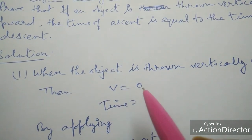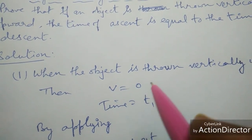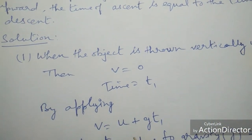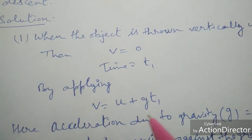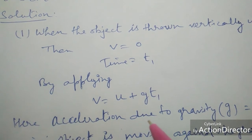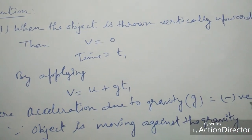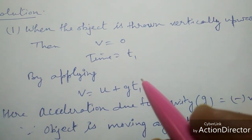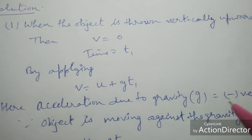Here v is equal to zero, because after reaching a certain height the velocity will be zero. Time is equal to t1. By applying the formula v = u + g·t1, here the acceleration due to gravity is taken as g instead of a. The acceleration due to gravity g will be negative because the object is going against gravity.